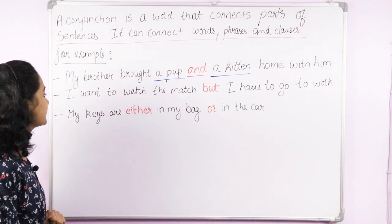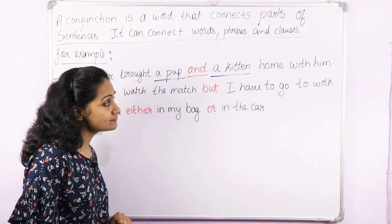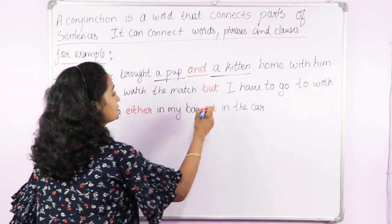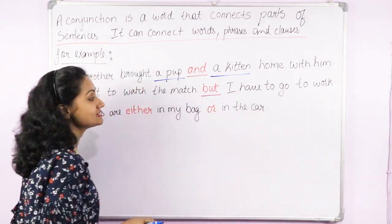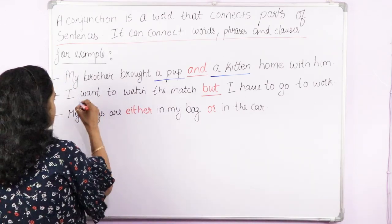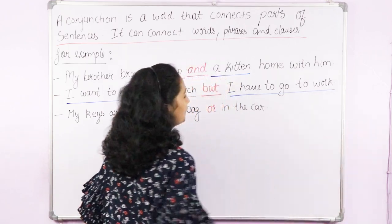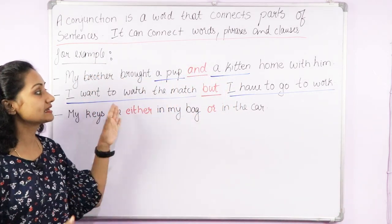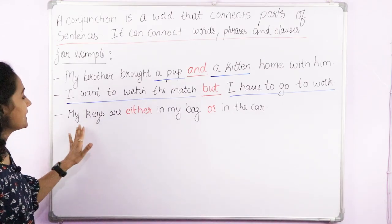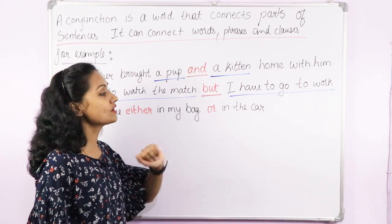Now let's look at the second sentence: 'I want to watch the match but I have to go to work.' So here the conjunction is 'but' and it is connecting two clauses — clauses means sentences. This is the first clause and this is the second clause. So 'but' is connecting two clauses.